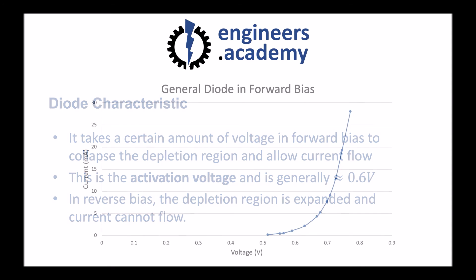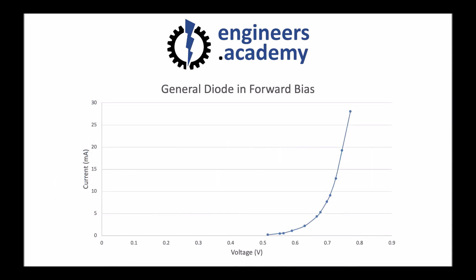In forward bias, we can see the characteristic in this graph. You can see voltage on the x-axis and there's no current to be observed for the first sort of 0.5 volts. But as soon as we hit 0.6, 0.7 volts, you can see that we must have collapsed the depletion region by this point. It's shrunk to the point that now current can flow and so we see this non-linear increase in current.